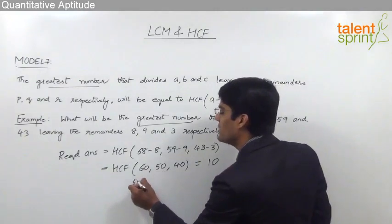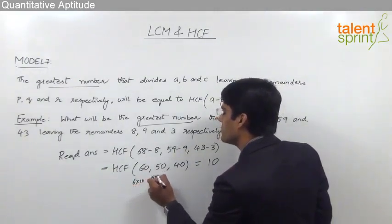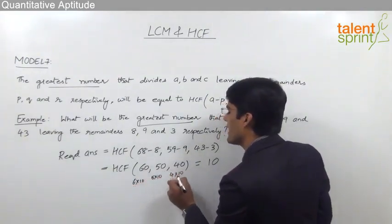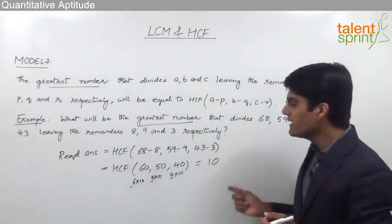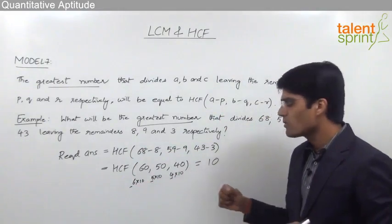Why? Because all these are multiples of 10: 6 into 10, 5 into 10, and 4 into 10. And here 4, 5, and 6 have got no other common factors. So obviously the highest common factor that we get out of it is 10.